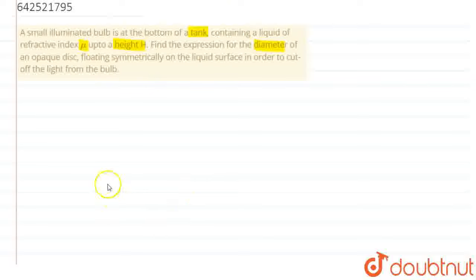So, here if we look at the situation what is given in the question, there is a bulb at the bottom of the tank. We assume this is the bottom of the tank, and this is the surface of the water in the tank.